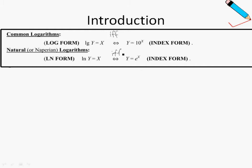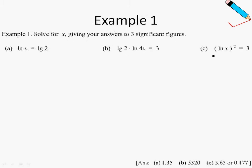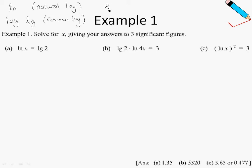Before example 1a, let's recap: to get rid of ln (natural logarithm), take exponential; to get rid of lg (common logarithm), use base 10. In example 1a, we have ln x = log 2. Since we have a natural logarithm, we take exponential on both sides: e^(ln x) = e^(log 2). Exponential and ln cancel, so x = e^(log 2). Pressing this in your calculator and rounding to 3 significant figures gives x = 1.35. Note that the lg button on a calculator looks like 'log'.